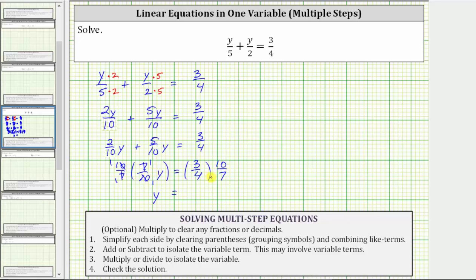On the right side, we can simplify before multiplying. Four and 10 share a common factor of 2. There are two 2s in 4 and five 2s in 10. Multiplying, we have 15 fourteenths. The solution to the equation is y equals 15 fourteenths.